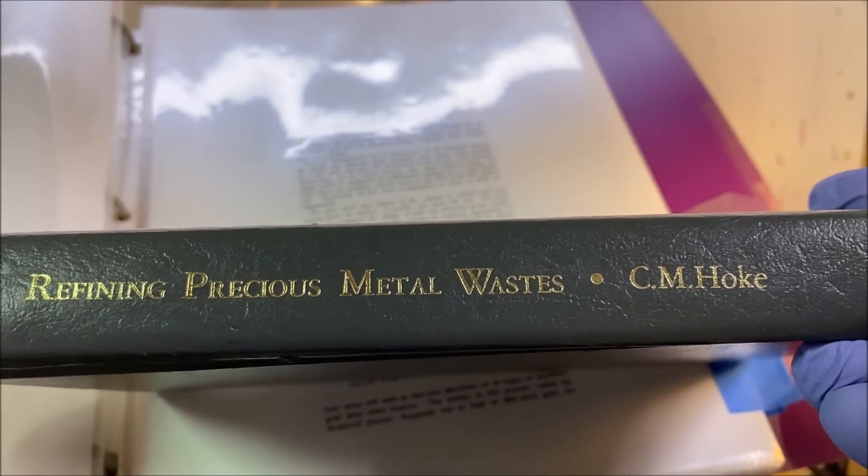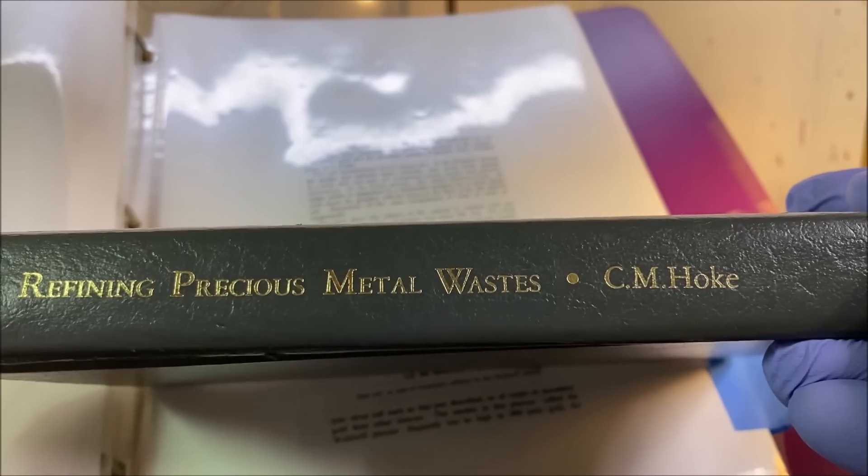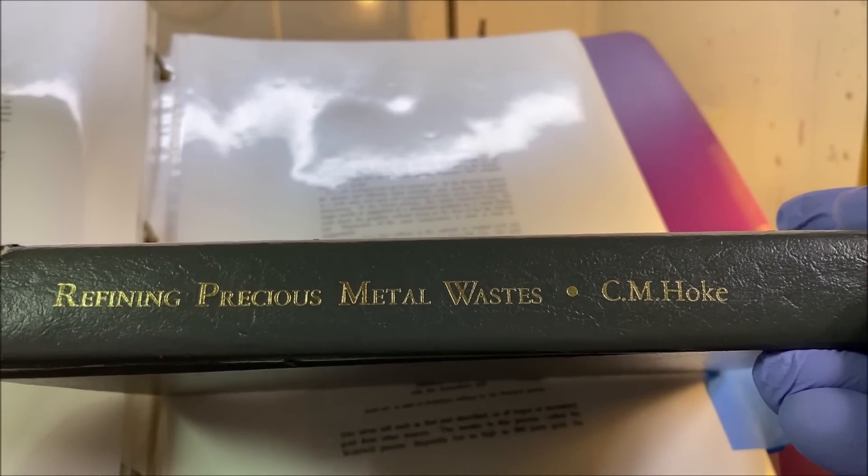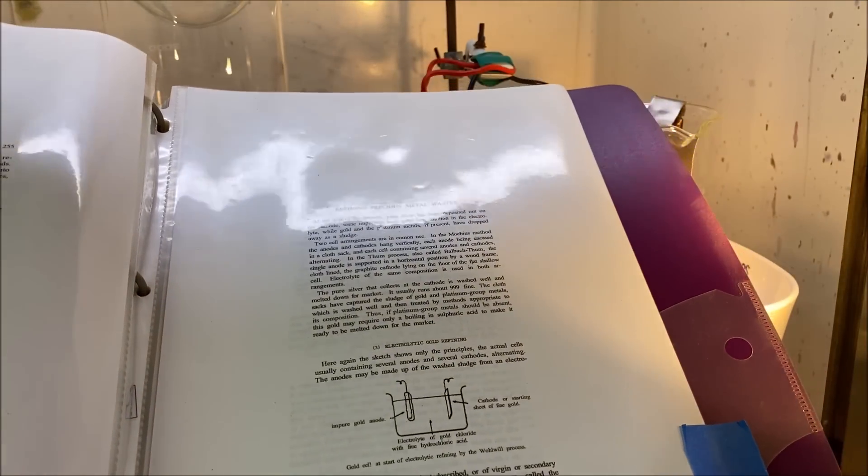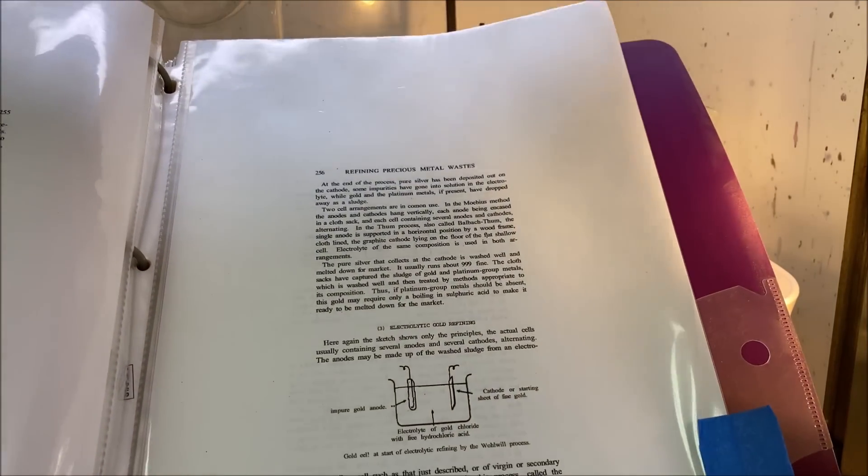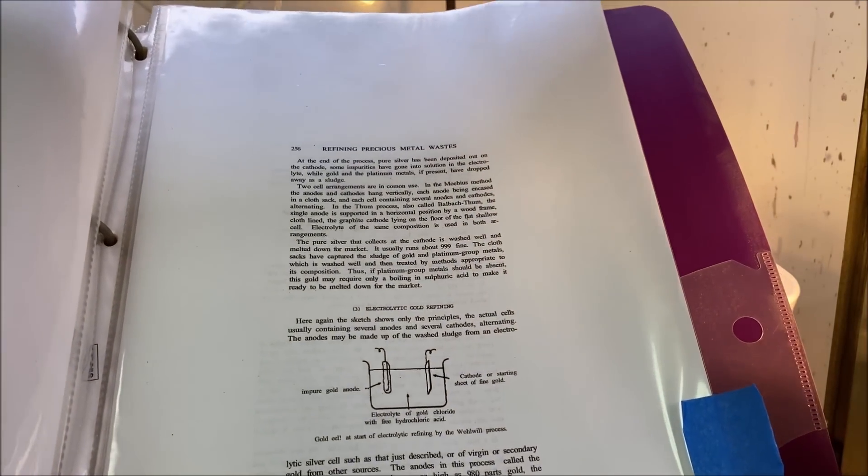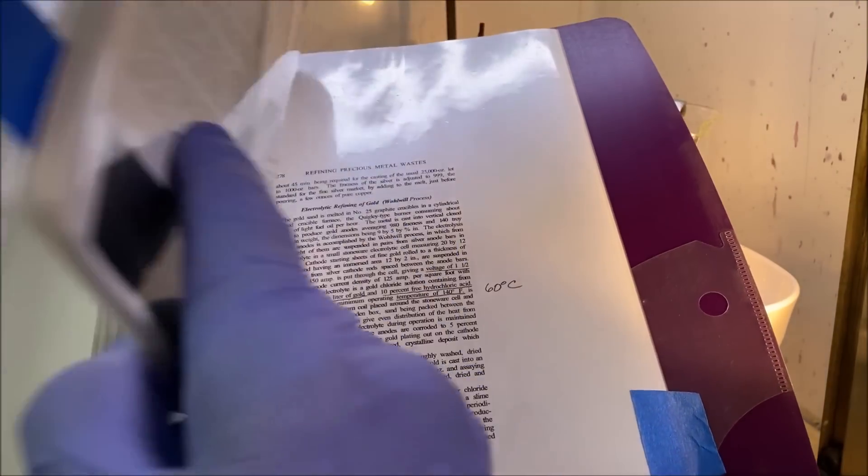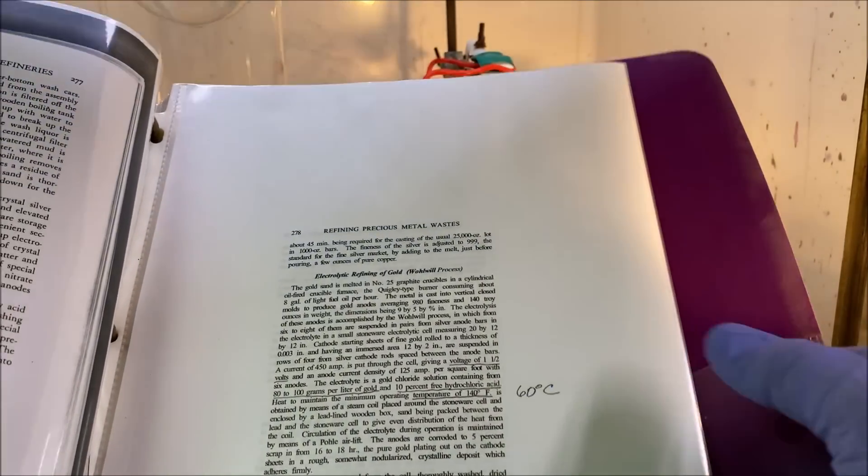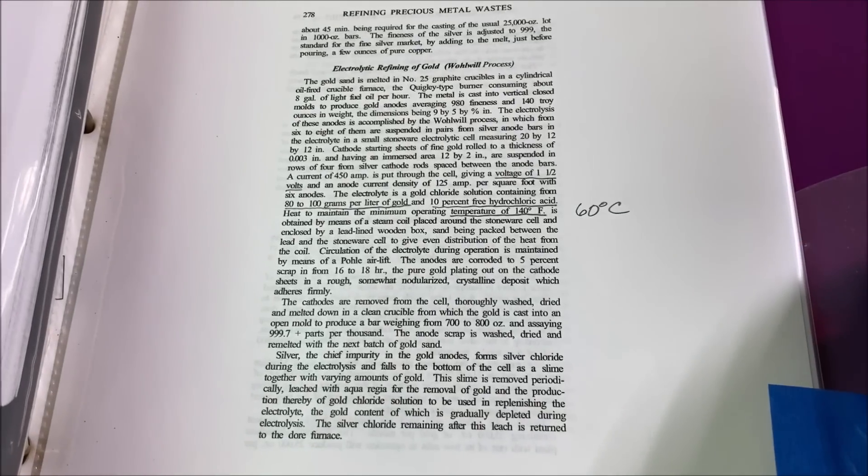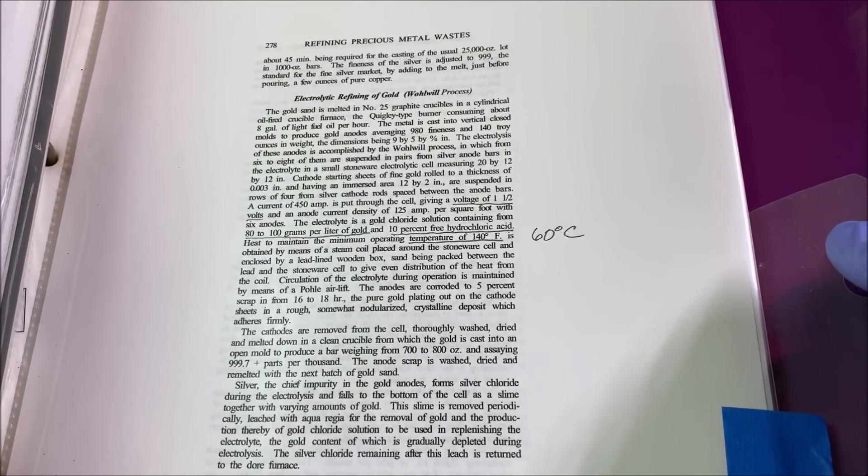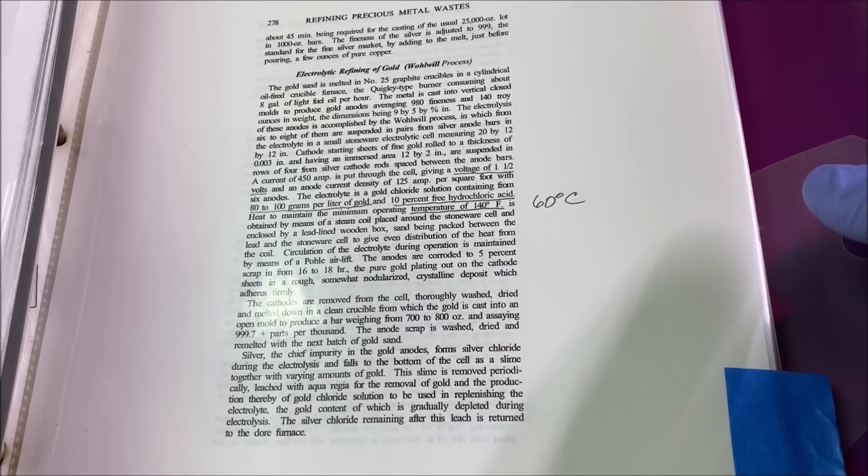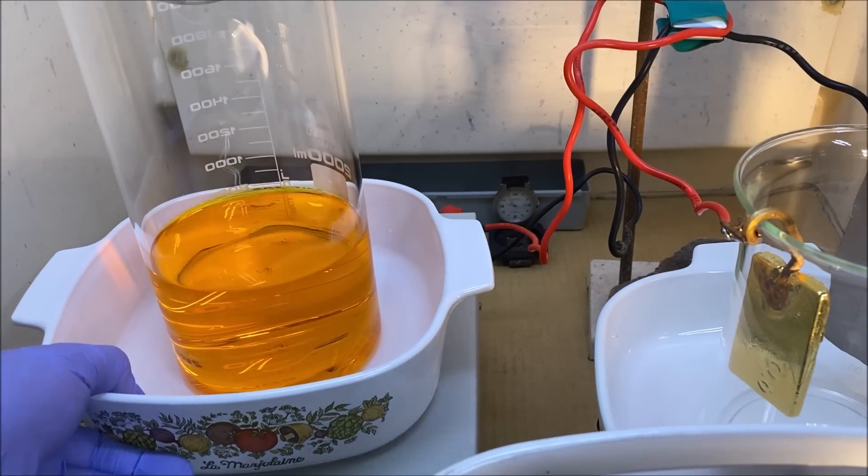The name of the book is Refining Precious Metal Wastes by C.M. Hoke. This book is out of print; they're about 500 bucks if you want to buy a hard copy like this. But you don't have to do that. The book is available as a free PDF download on the internet. Just type in Refining Precious Metal Wastes by C.M. Hoke, and you'll have access to the same exact procedure.